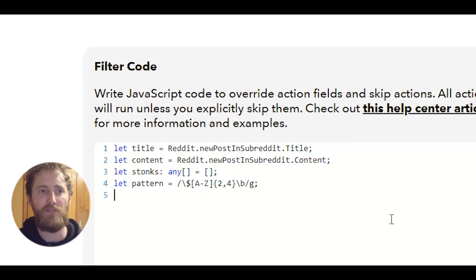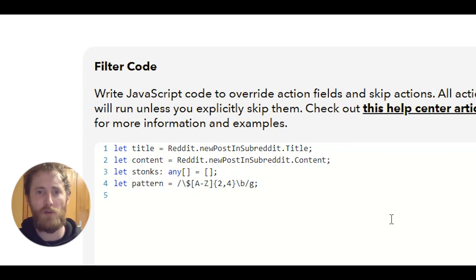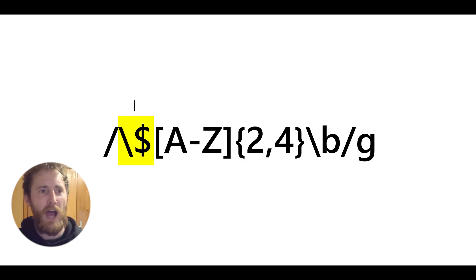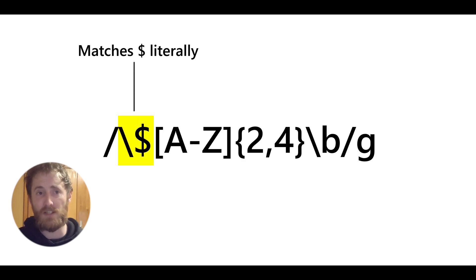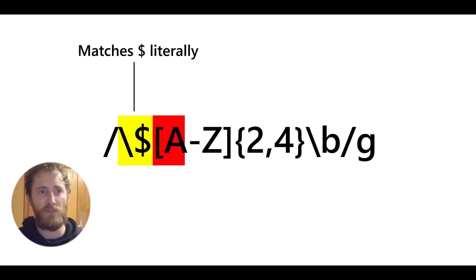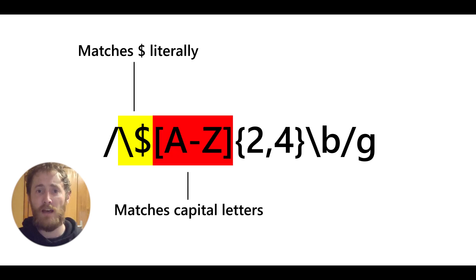You can see I've already defined a few things at the top just to help keep my code readable. One of those is our regex pattern, and I'm going to go through it now. We want to match a dollar sign followed by two to four uppercase letters. In the pattern I start by matching the dollar sign, and you'll notice directly in front of it we have a backslash. This is because a dollar sign is normally a special character, but by using the backslash we can ignore the special meaning and look just for that literal character.